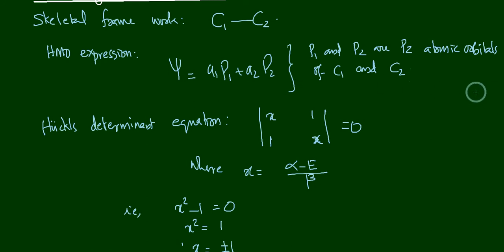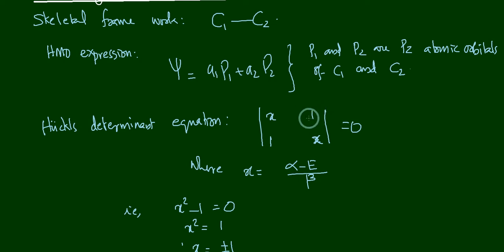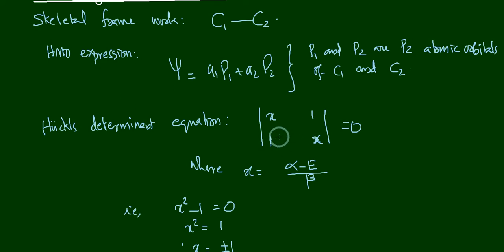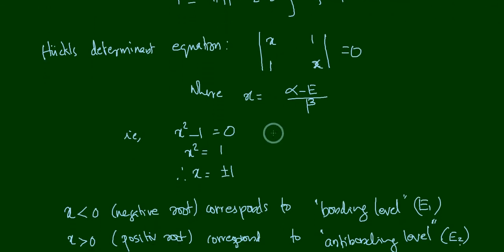The Hückel determinant equation is written by filling x in the diagonal positions. For the 1-2 position, since atoms 1 and 2 are bonded, we place 1 there; similarly for the 2-1 position. So the determinant is |x, 1; 1, x| = 0. We already know that x = (α − E) / β.